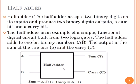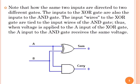And that is the digital circuit of a half adder. Notice how the two inputs are directed to two different gates. The inputs to the exclusive OR gate are also the inputs to the AND gate.